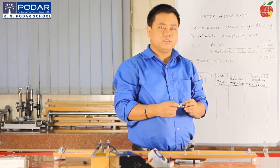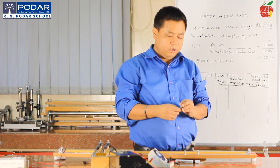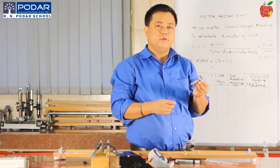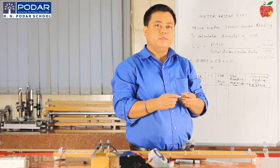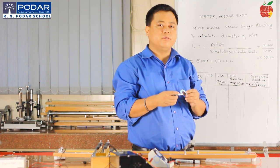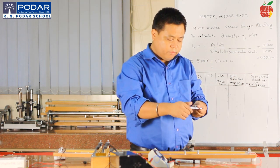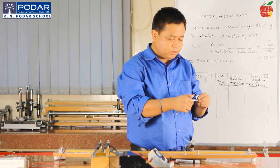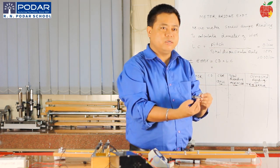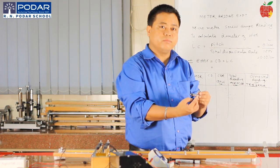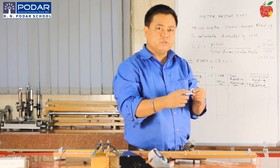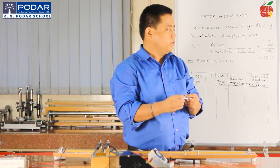The next part of this experiment is to calculate the diameter of this wire using the micrometer screw gauge. This is my micrometer screw gauge. First, I need to know the least count of this micrometer screw gauge. It has two scales: the scale you can see here is called the linear scale or main scale, and the other part is called the circular scale.